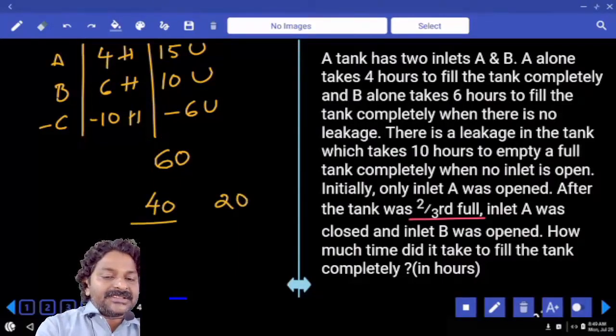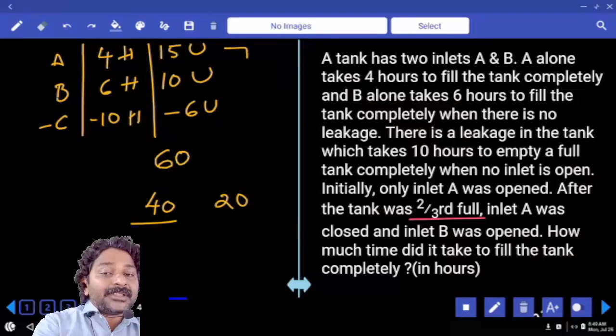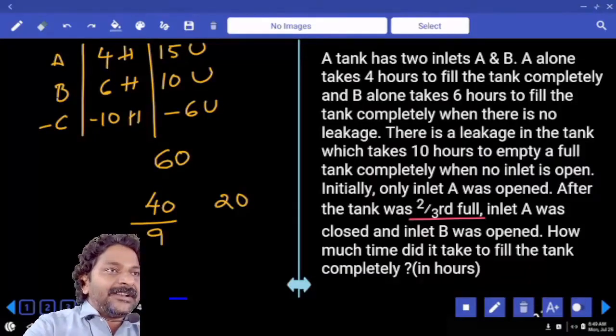So 40 units are filled by both A and C. When you have both A and C, 15 minus 6, only 9 units of work is done per hour.